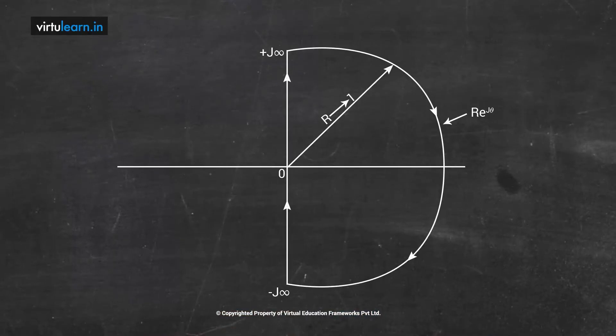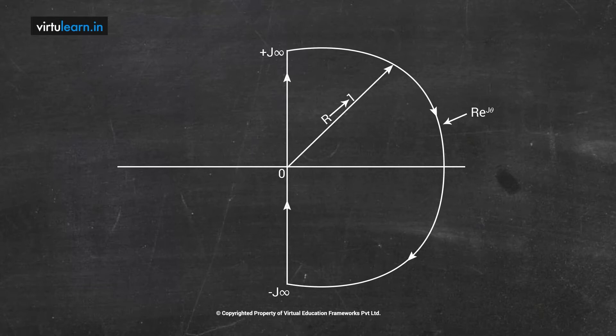The Nyquist path tries to cover the entire right half of the S plane. It goes from 0 to plus j infinity, then there is a semicircle with radius R tending to infinity — written as R·e^(−jθ) where θ goes from +π/2 to −π/2 — and then from minus j infinity back to 0. So for a type 0 system there are three sections: Path 1, Path 2, and Path 3.